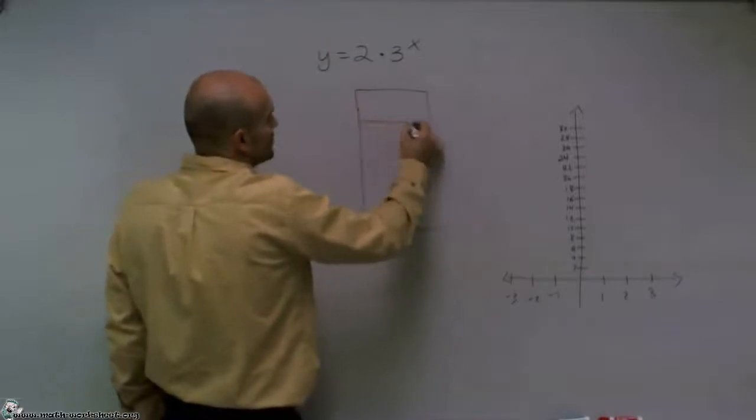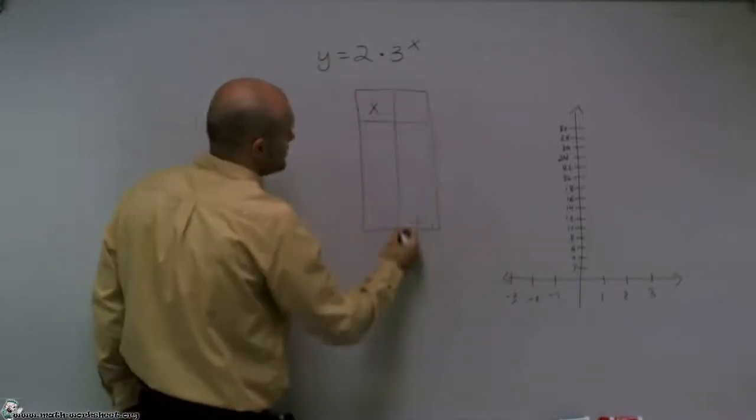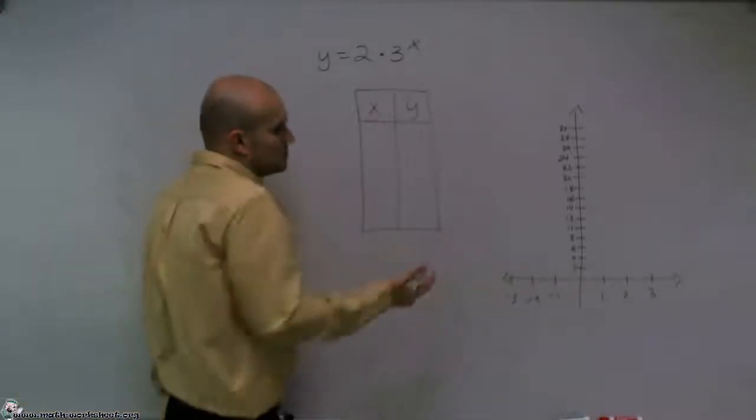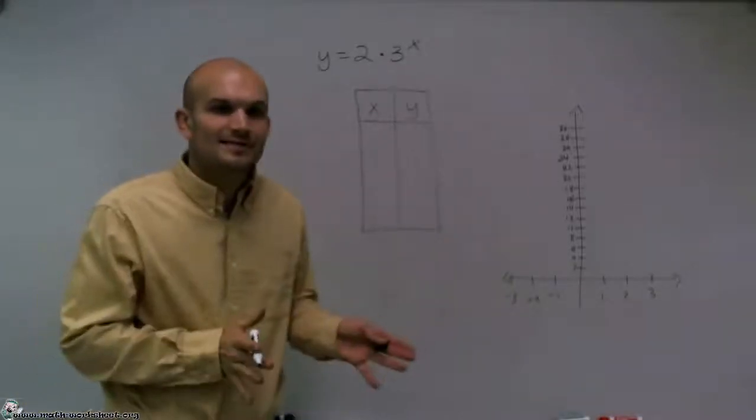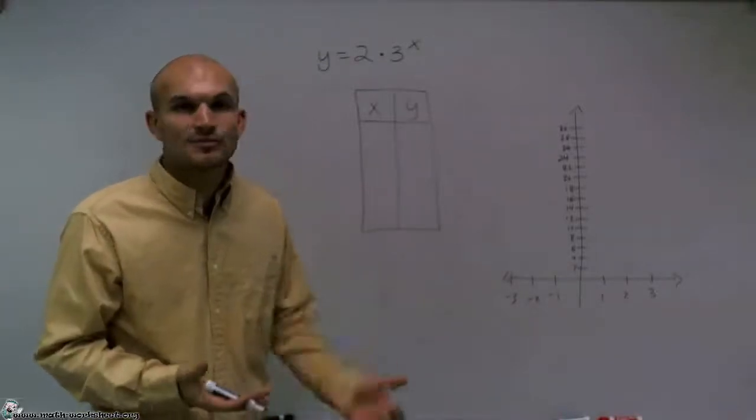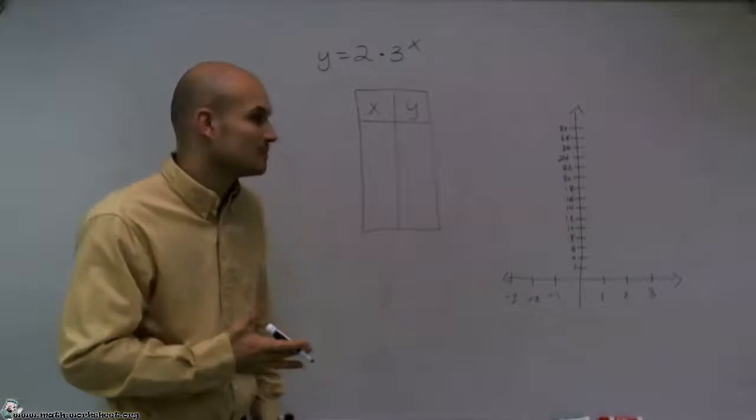Now, there's no reason to get crazy with your table of values. Pick values that are very easy to compute. Usually you want to always pick negative and positive values to see what's going to be happening with the relationship of the graph.